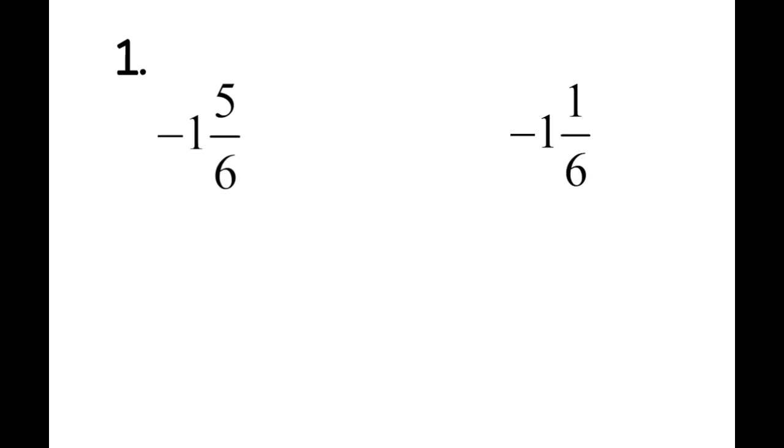Number one, we have negative 1 and 5/6 and negative 1 and 1/6. And so we look at these numbers, and for the most part, they're the same. You have your 1 whole, your negative 1 whole, your 6, your denominator. So really, what we're left with is looking towards the numerators to see which one is less than the other.